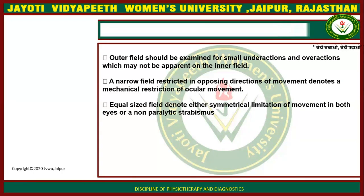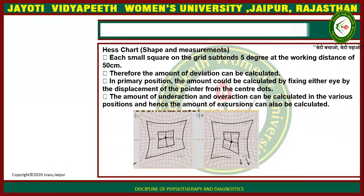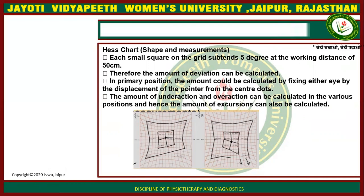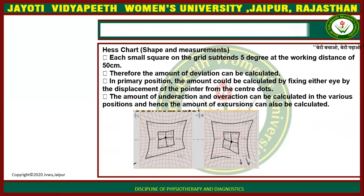Equal-sized fields denote either symmetrical limitation of movement in both eyes or non-paralytic strabismus. Each small square on the chart subtends 5 degrees at a working distance of 50 cm, so the amount of deviation can be calculated in the primary position. The amount of deviation can be calculated by fixing either eye and measuring the displacement of the pointer from the center dot. Under-action, over-action, and excursion can all be quantified in various positions.